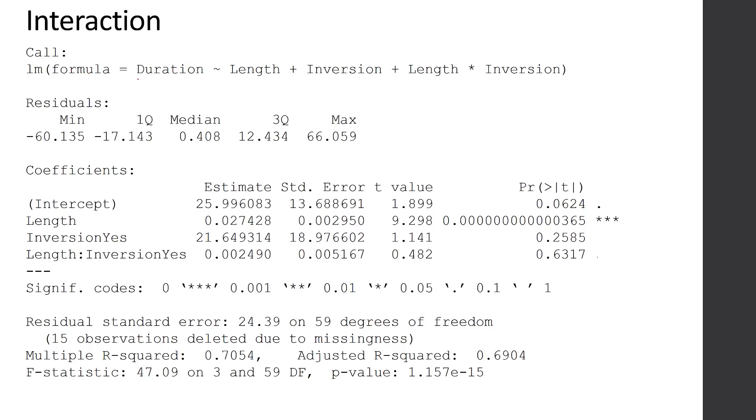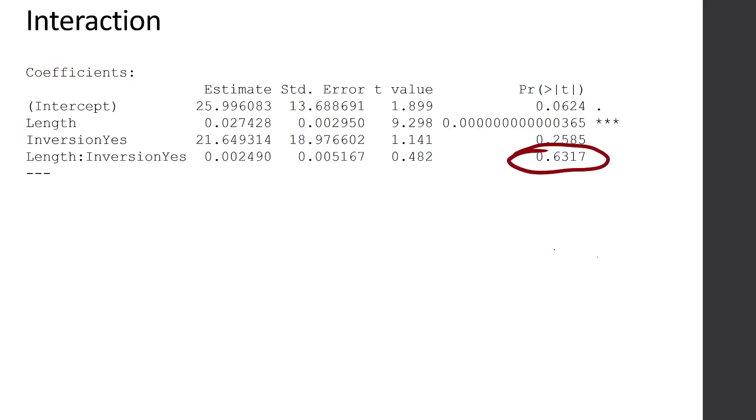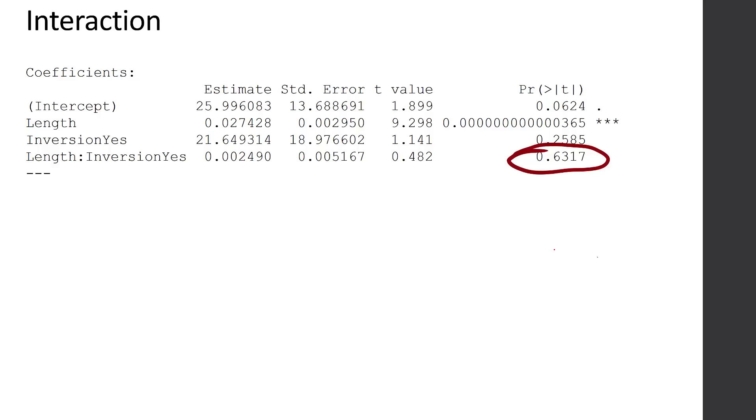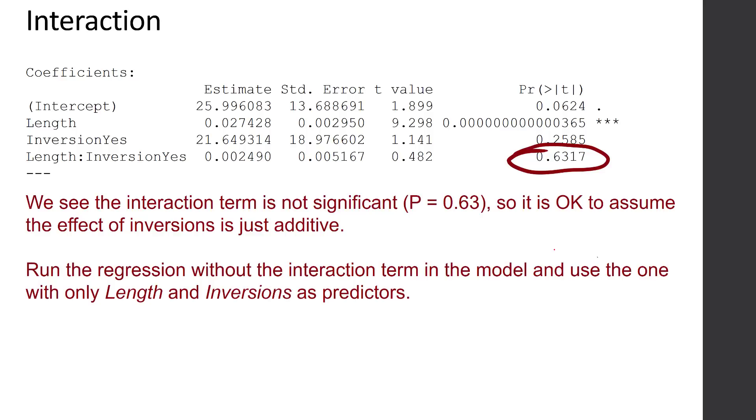I've created the model where I did duration tilde length plus inversion plus length times inversion. That should look familiar because we've already done interactions in ANOVA. We've got our coefficients box with our intercept, length, the inversions, and then the interaction between length and inversions. We can see that our p-value for the interaction is high, 0.6317. A high p-value means we have lack of significance, we don't have evidence of significance. So it's okay to assume that the effect of inversions is just additive. What we were seeing in that picture is confirmed by the p-value. Then you can run the regression without the interaction term in the model and use the one that we started with, which was just length and inversions as predictors.